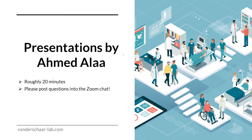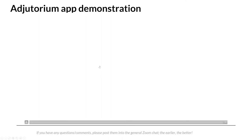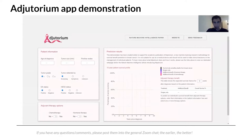Next, Ahmed has two short presentations — collectively about 20 minutes. The first is a demonstration of how Adjutorium can be used. This is a demonstration for the Adjutorium Breast Cancer Prognostication Tool, showing what it does and how to use it through an exemplary patient.